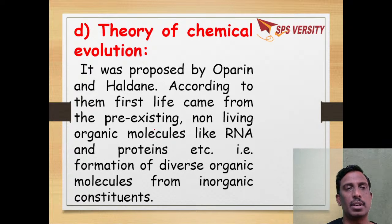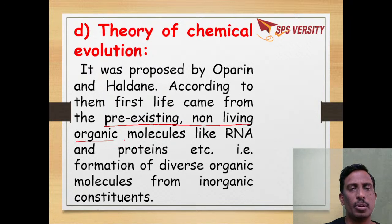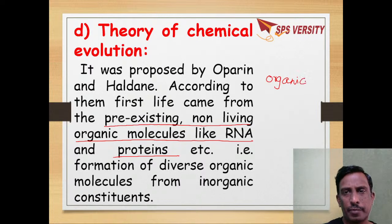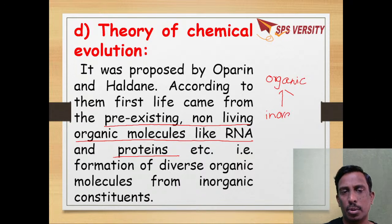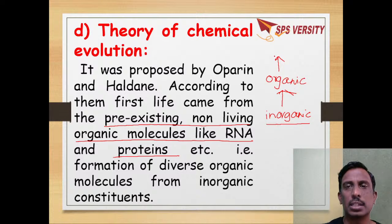Later on, this gave rise to the theory of chemical evolution, which says that life came from pre-existing organic molecules like RNA, DNA, and proteins. These organic molecules were formed from inorganic molecule constituents. So according to chemical evolution, inorganic molecules gave rise to organic molecules, and organic molecules gave rise to life.